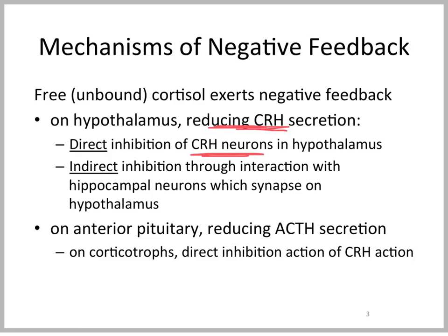The other place where negative feedback occurs is on the anterior pituitary, where you see reduced ACTH secretion. Glucocorticoid receptors directly on the corticotrophs lead to an inhibition of the positive action of CRH on ACTH secretion, essentially blocking the positive effect of CRH on the corticotrope that makes ACTH in the anterior pituitary.